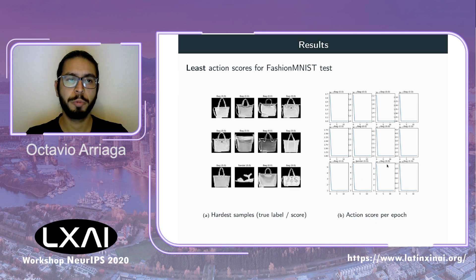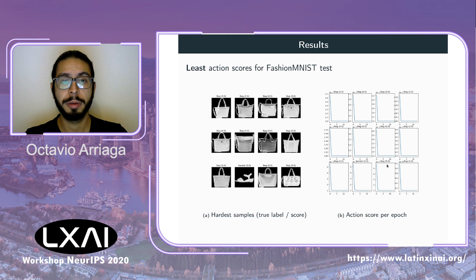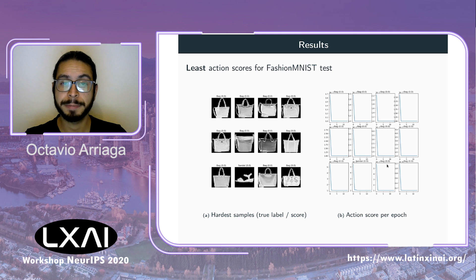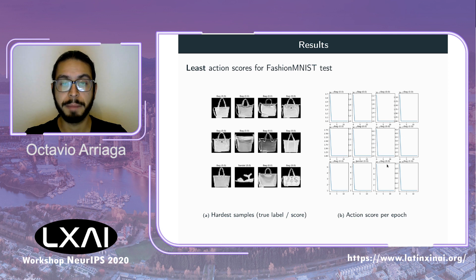We repeat the same experiments on the Fashion MNIST dataset and find that the easiest samples were mostly bags, with the learning dynamics repeating what was observed on MNIST — samples were quickly learned.